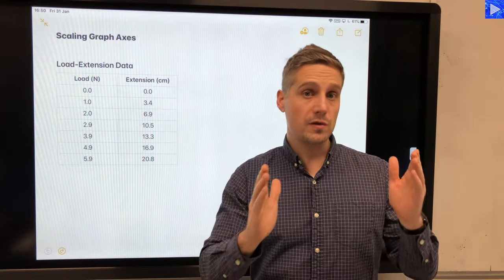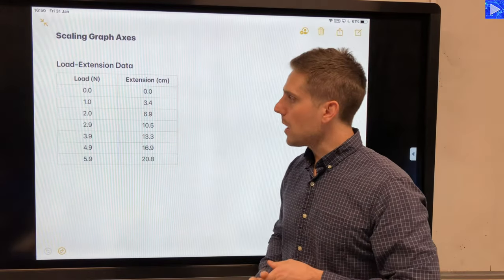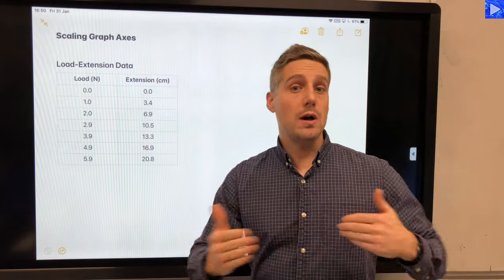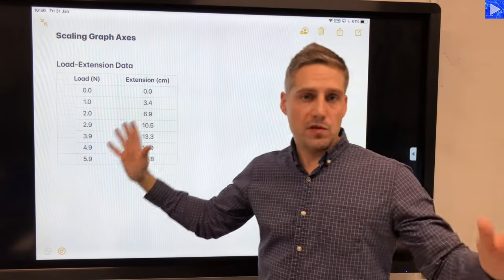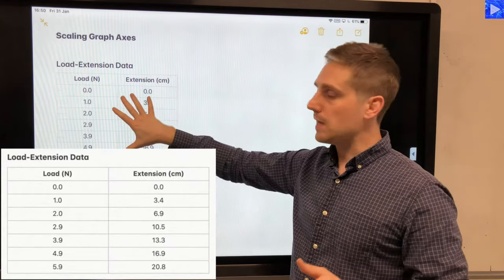And how do I also ensure that it covers more than half of the grid? So I'll be giving you some examples and showing you a method for doing this. This is my first set of data, nice easy set of data starting at zero going up in some almost round values there and some slightly less round ones here.